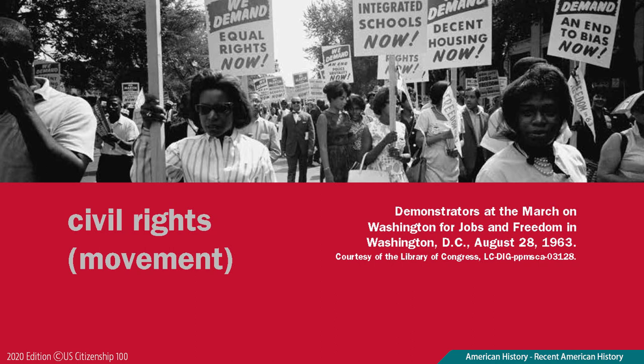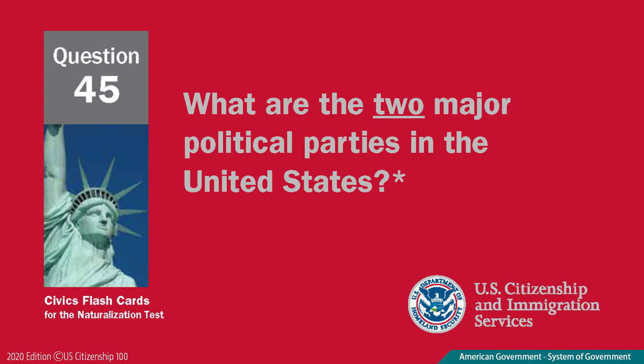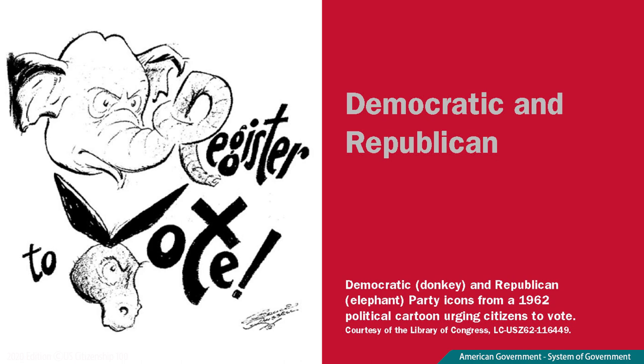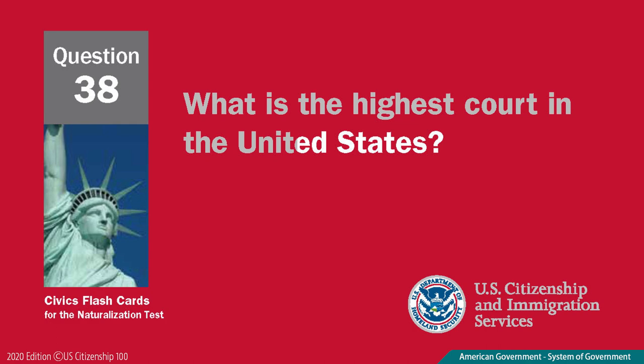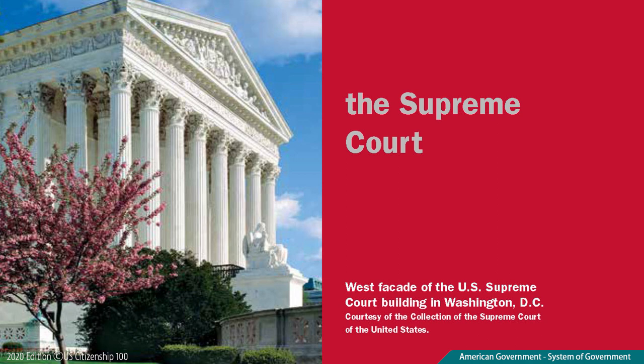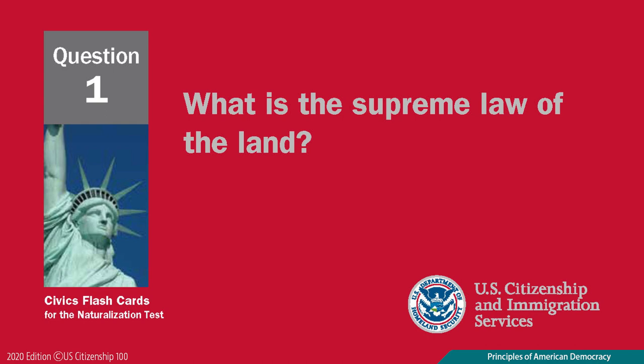What are the two major political parties in the United States? Democratic and Republican. What is the highest court in the United States? The Supreme Court. What is the Supreme Law of the Land? The Constitution.